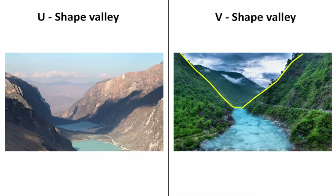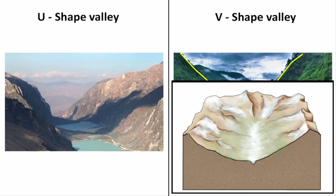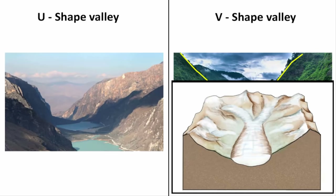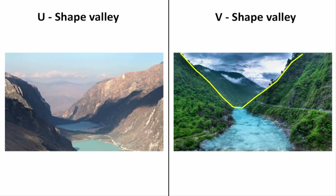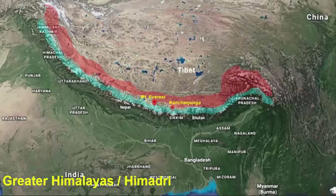Even glaciers do the same work that rivers and streams do. As the glacier moves slowly, it grinds the valley floor and carves the landform in the form of letter U. Because glaciers are massive, heavy, thick blocks of ice, when glaciers melt and begin to move, it grinds the land surface in the shape of letter U.